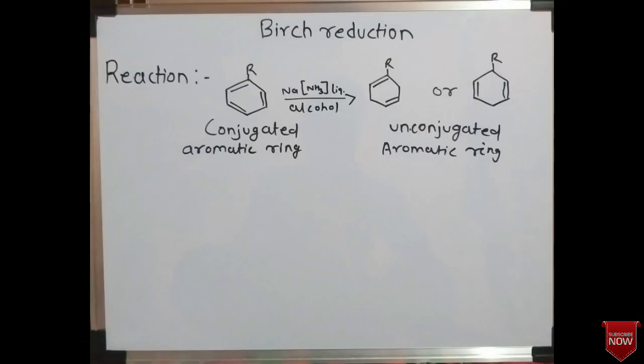So first, what is the Birch reduction reaction? In the Birch reduction reaction, the conjugated aromatic ring is converted into an unconjugated aromatic ring in the presence of sodium in liquid ammonia with alcohol.